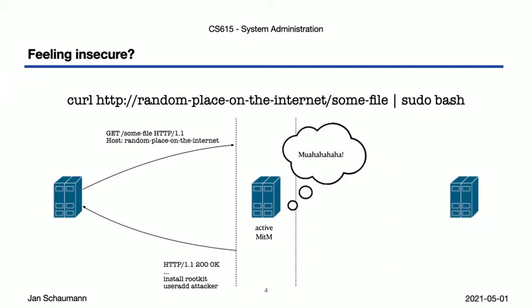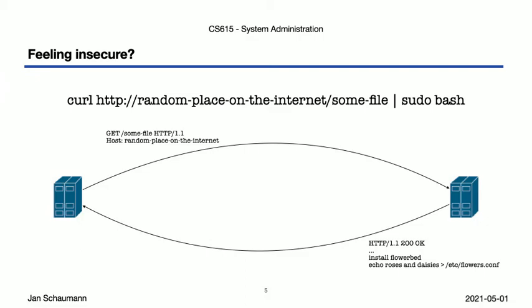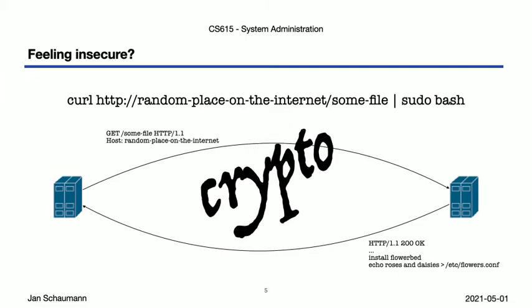So this is pretty insecure. What do we do to fix this? Let's pretend we asked some smart cookies from Stevens. Pretty sure the most common answer would be: rub some crypto on it! If you're on the internet and something's insecure, you rub some crypto on it and it becomes secure, right? Perhaps even military-grade encryption.